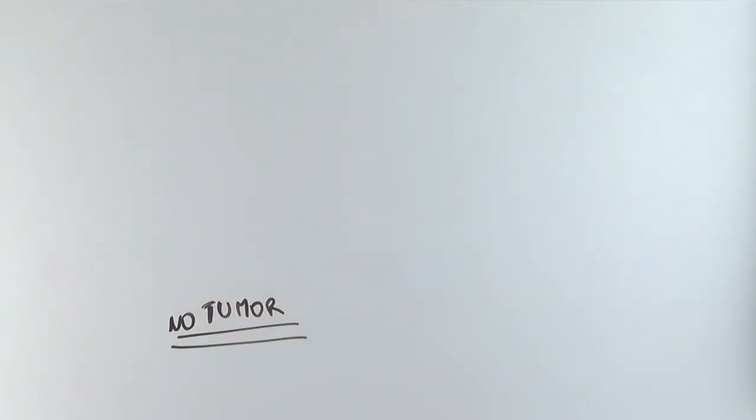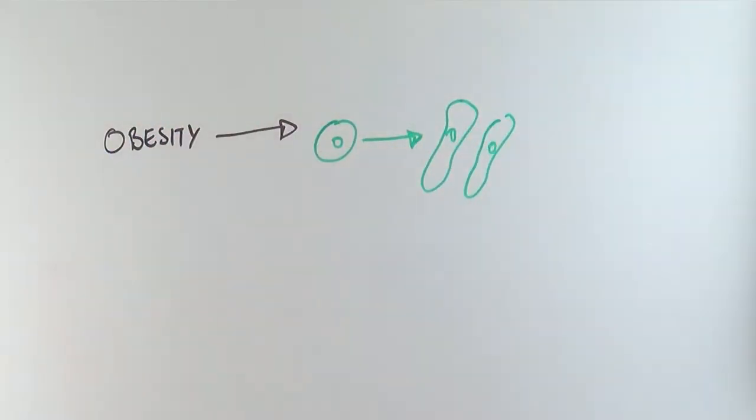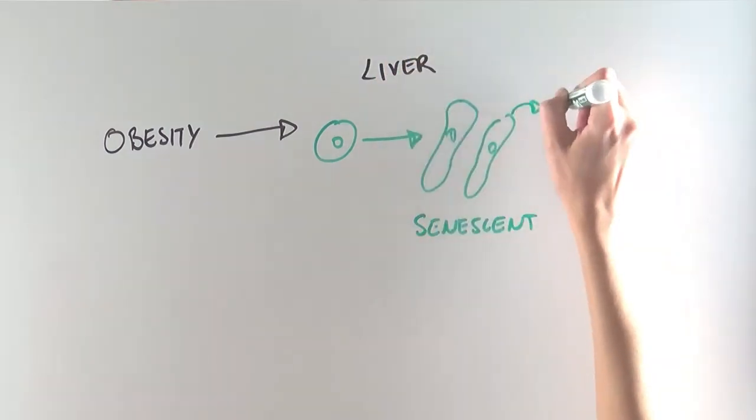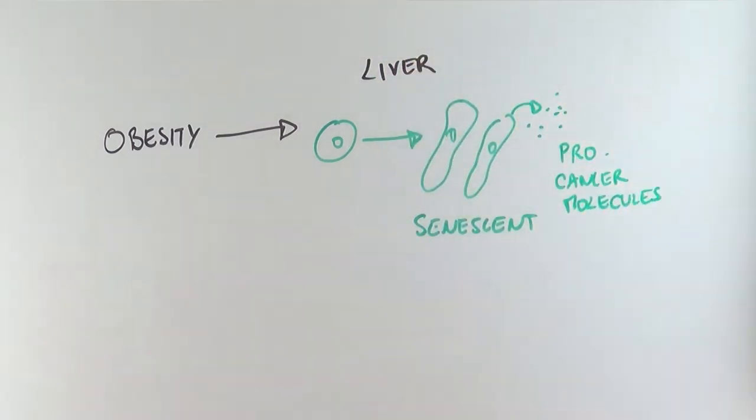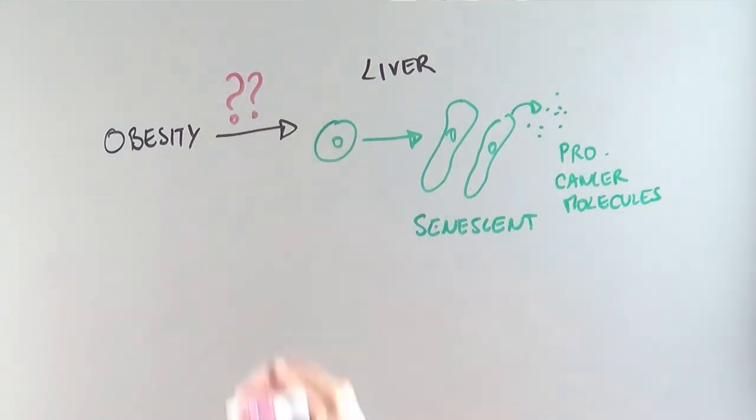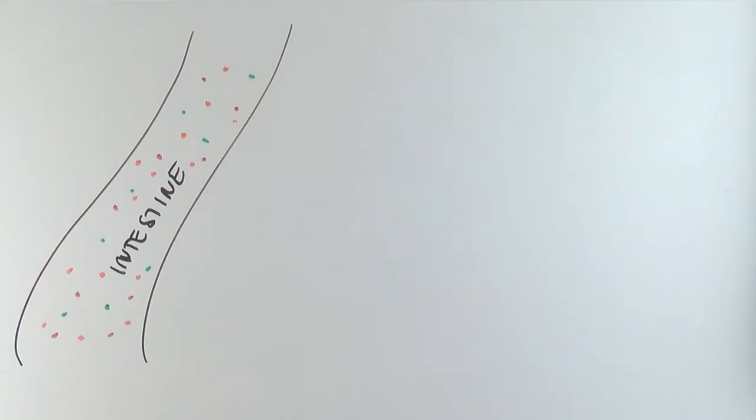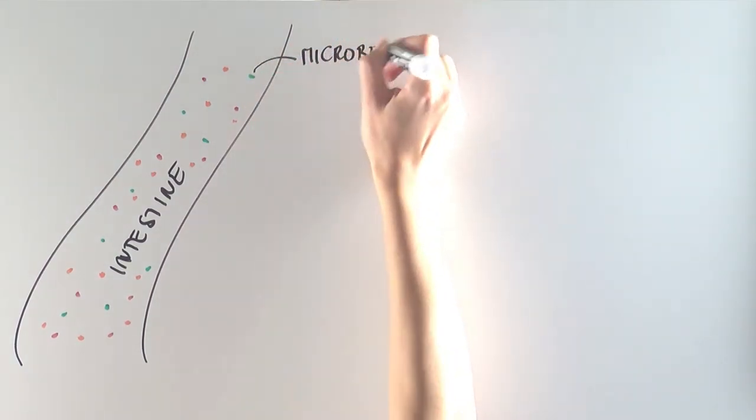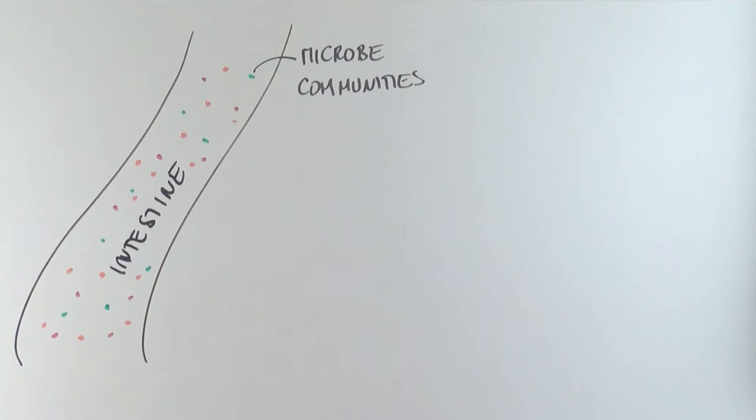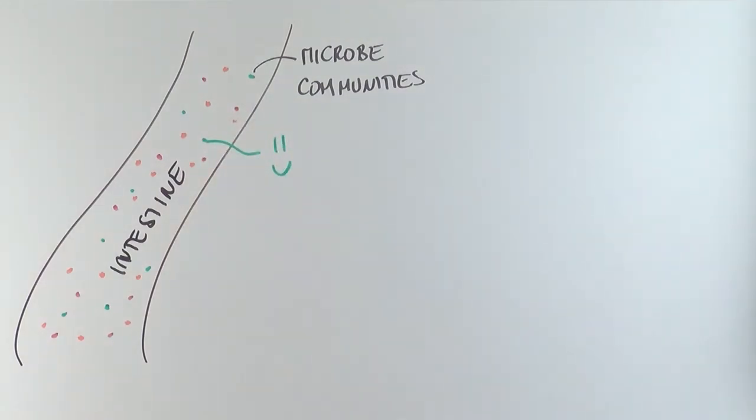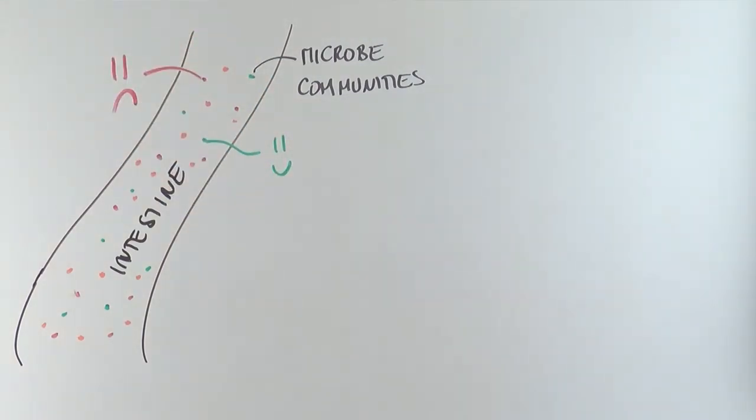So this suggests that obesity is somehow making the cells in the liver senescent and causing them to produce all kinds of pro-cancer compounds. So the next question is, how can obesity affect the state of cells in the liver? To answer this question, the scientists looked at the intestine. Our intestine is full of microbes, including bacteria, that form communities that play important roles in our health. Some bacteria are important in promoting health of the intestine, while others can be detrimental.